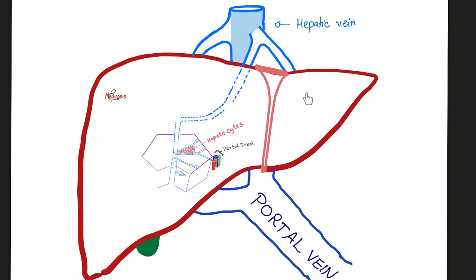The liver has right and left lobes, and each lobe has lobules — this beautiful hexagon shape. In the middle of the hexagon you find liver cells, also known as hepatocytes. At the edges of those hexagons — six edges — you find a beautiful portal triad. The triad is made of a branch of the hepatic artery, a branch of the portal vein, and a branch of the bile duct.